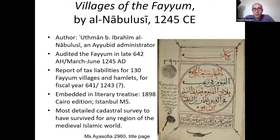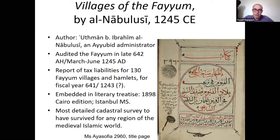This treatise was known for over a century, but nobody thought of actually doing a statistical analysis with it. I think there was also not the capability of doing that. The surviving manuscript — from which the Cairo edition was made — there's nothing like it for any other region of the medieval world in terms of the level of detail.